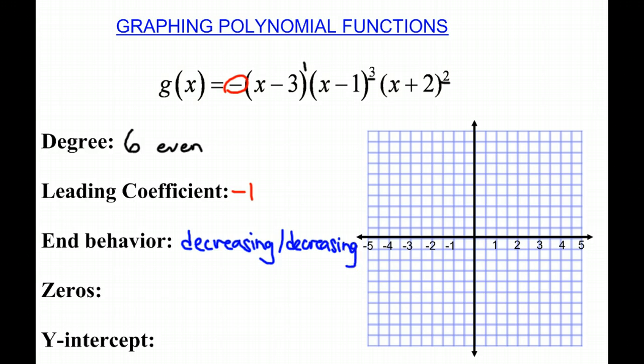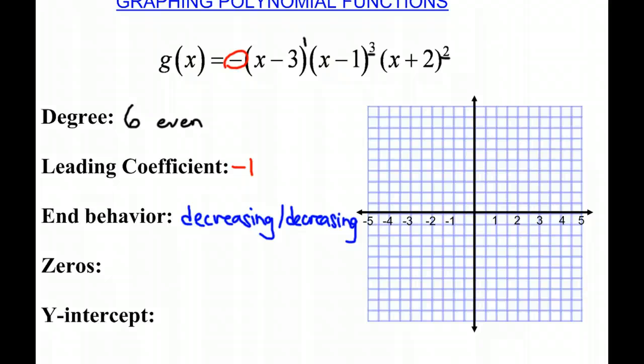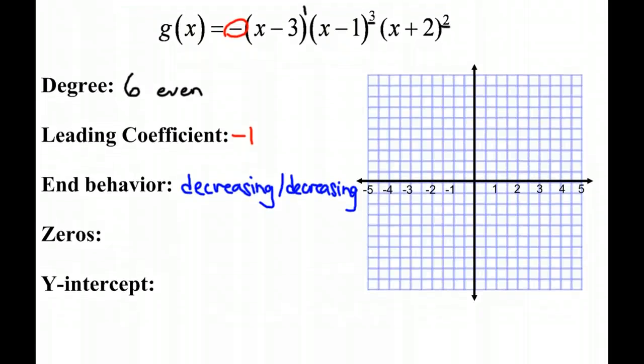Our next step is going to be finding out the zeros. So in this function, our zeros is when the parentheses equal zero. So when does x minus 3 equal zero? When does x minus 1 equal zero? And when does x plus 2 equal zero?